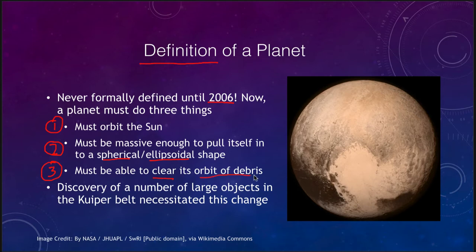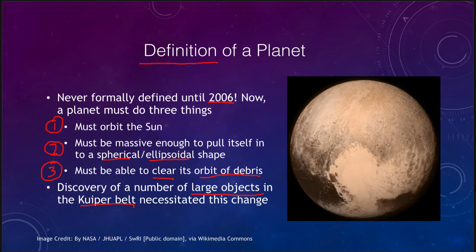And finally, it must be massive enough to clear its orbit of debris. Objects like Earth do not have a lot of debris floating around them, unlike the asteroid belt or the Kuiper belt. The discovery of numerous large objects in the Kuiper belt — comparable in size to Pluto — prompted the question of whether they should all be planets or simply another group of objects.